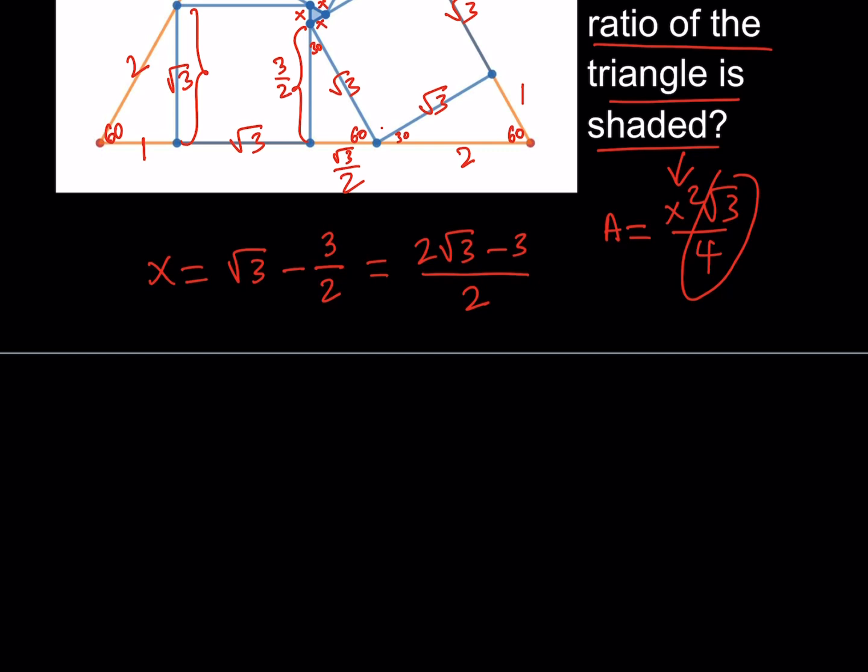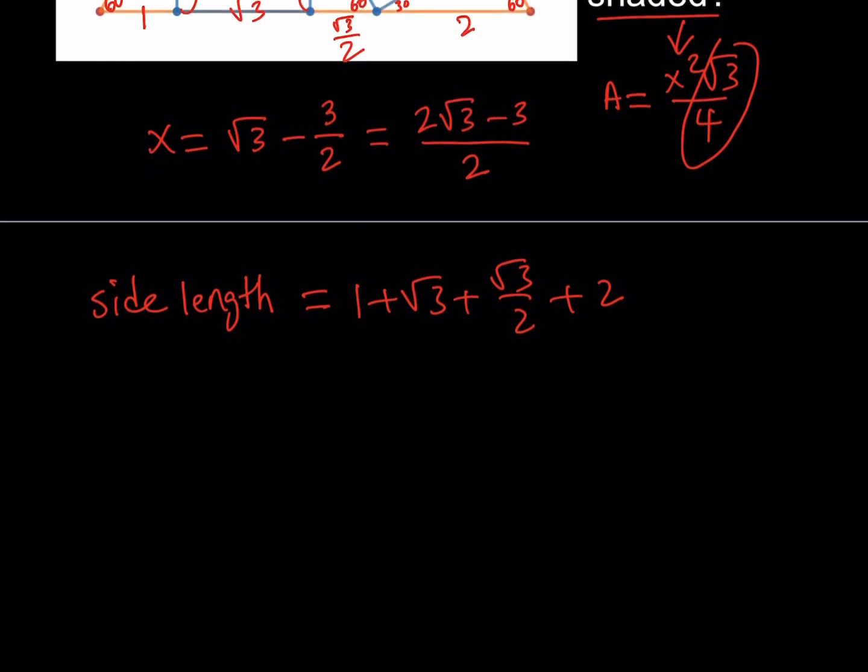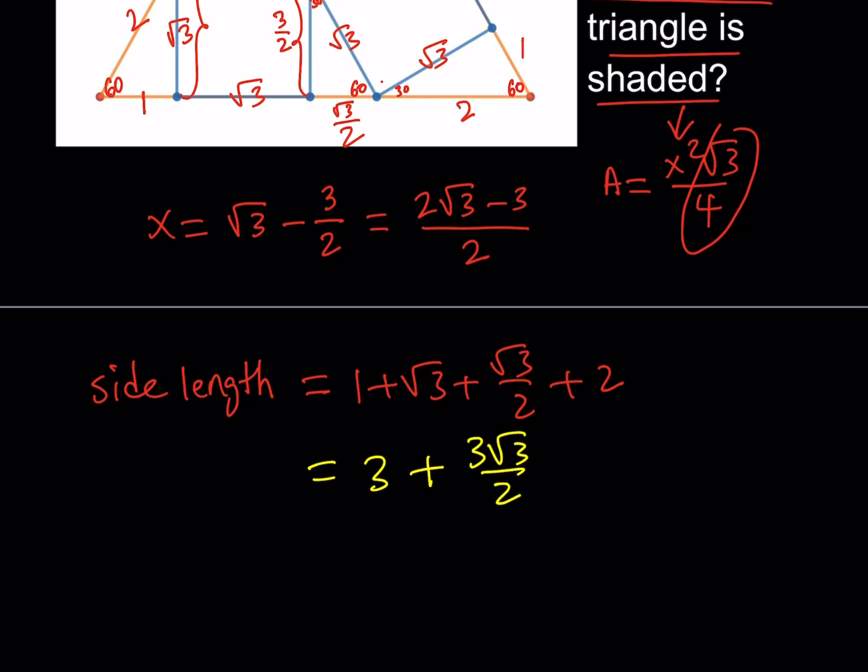The side length for the big triangle is going to be 1 plus root 3 plus root 3 over 2 plus 2. Okay. All right. Now, what are we going to do? We're going to go ahead and simplify this. Let's go ahead and simplify that. 1 plus 2 can be added. That's going to give us a 3. And these two can be added as well. And that's going to give us 3 root 3 over 2. So that's my side length for the large triangle.